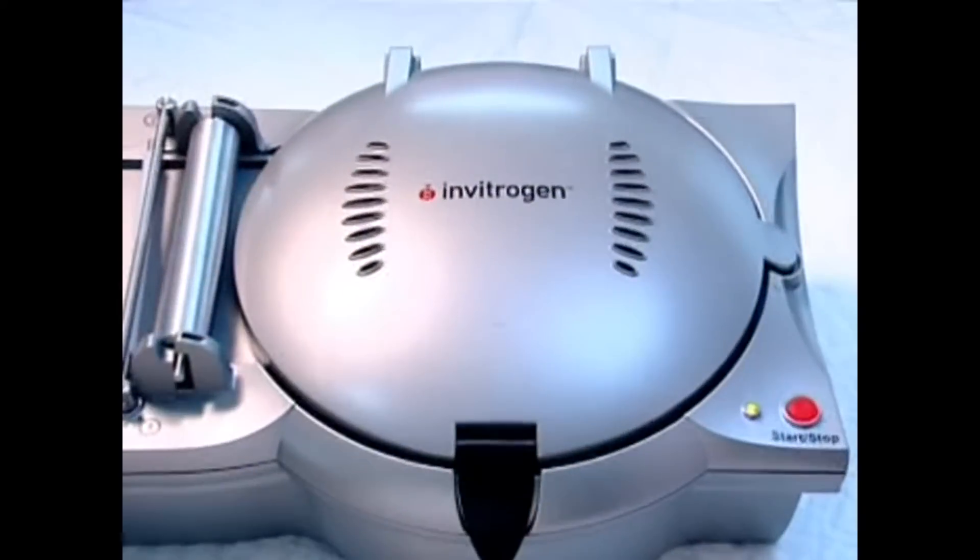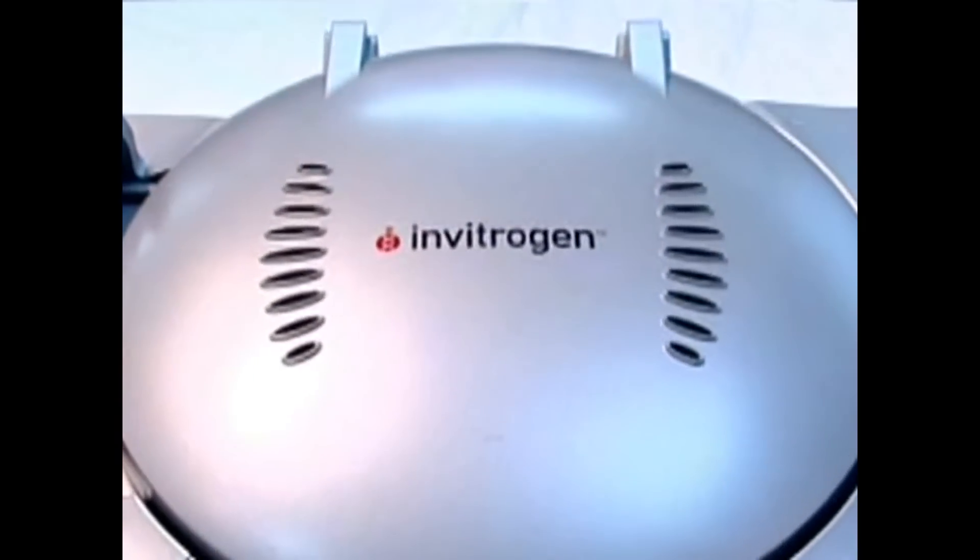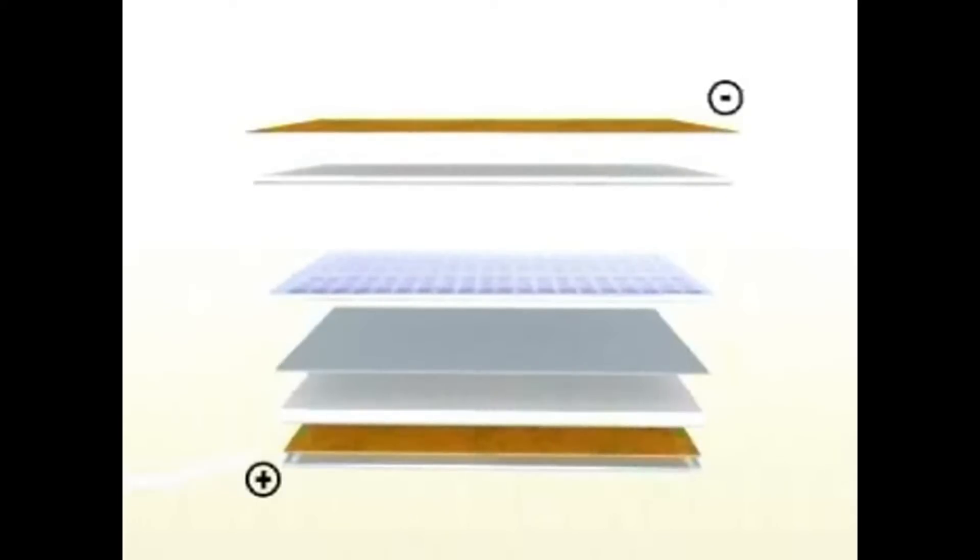This revolutionary dry electrode blotting technology is based on a simple concept. The separation gel is sandwiched between two ion reservoir matrices which absorb the ion products of electrolysis at the electrodes and replace them with current carriers.